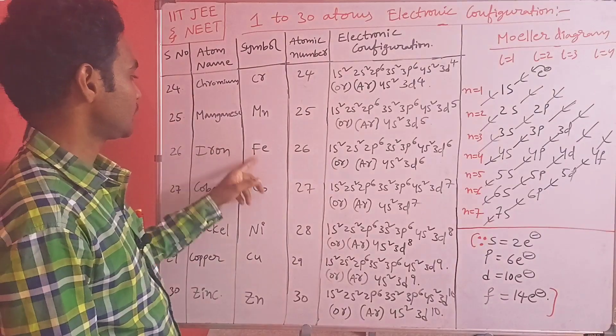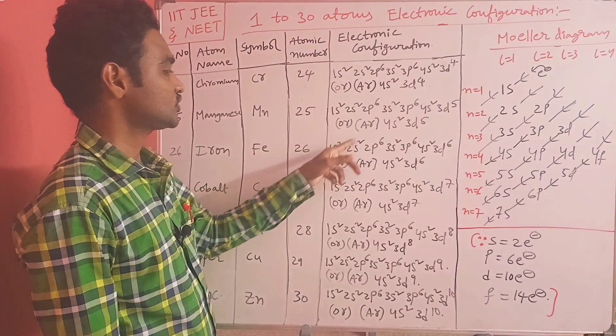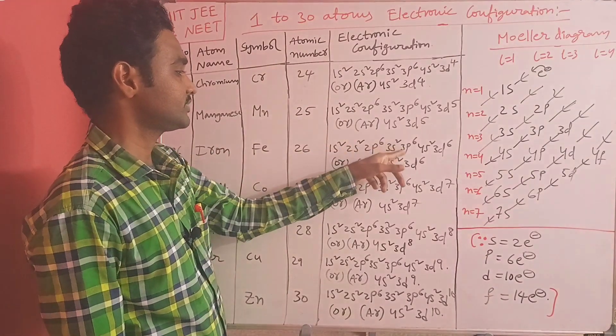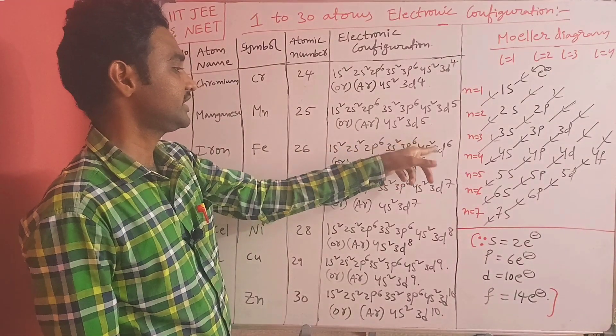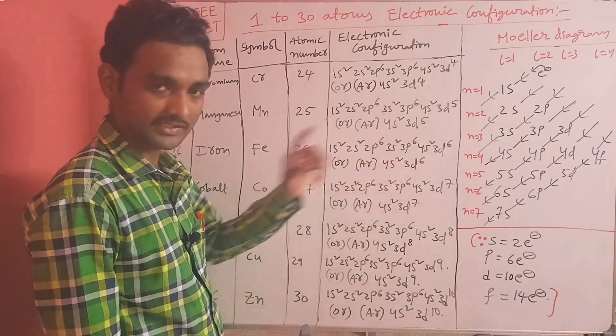Iron (Fe), atomic number 26: 1s2 2s2 2p6 3s2 3p6 4s2 3d6, overall [Ar] 4s2 3d6.